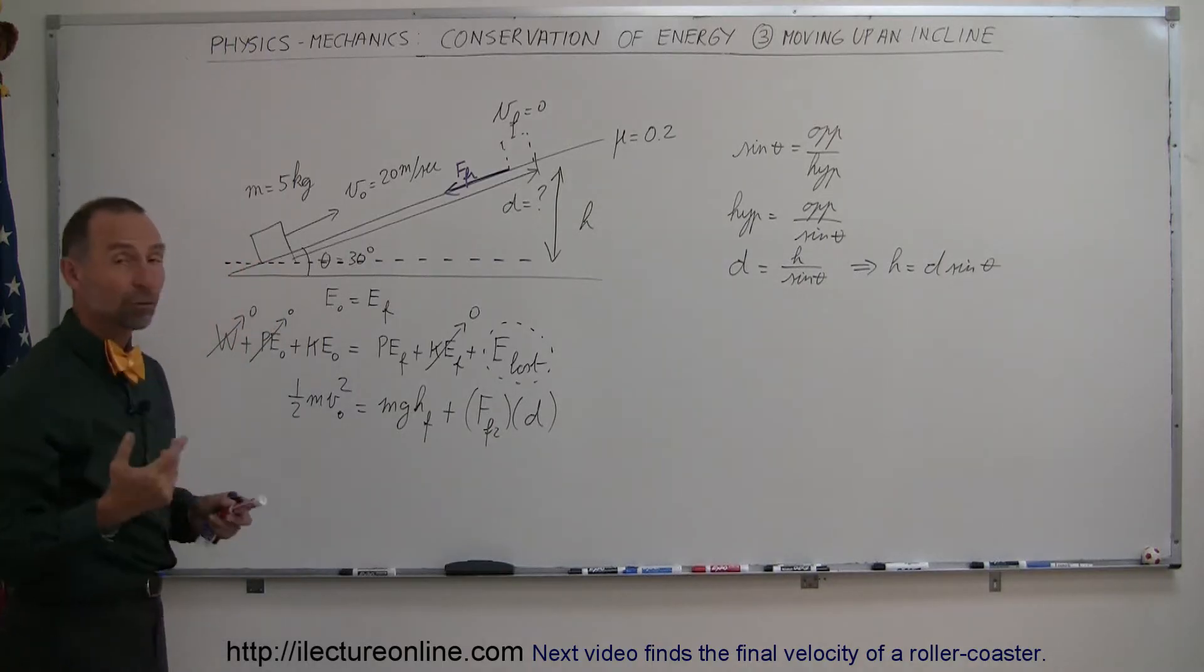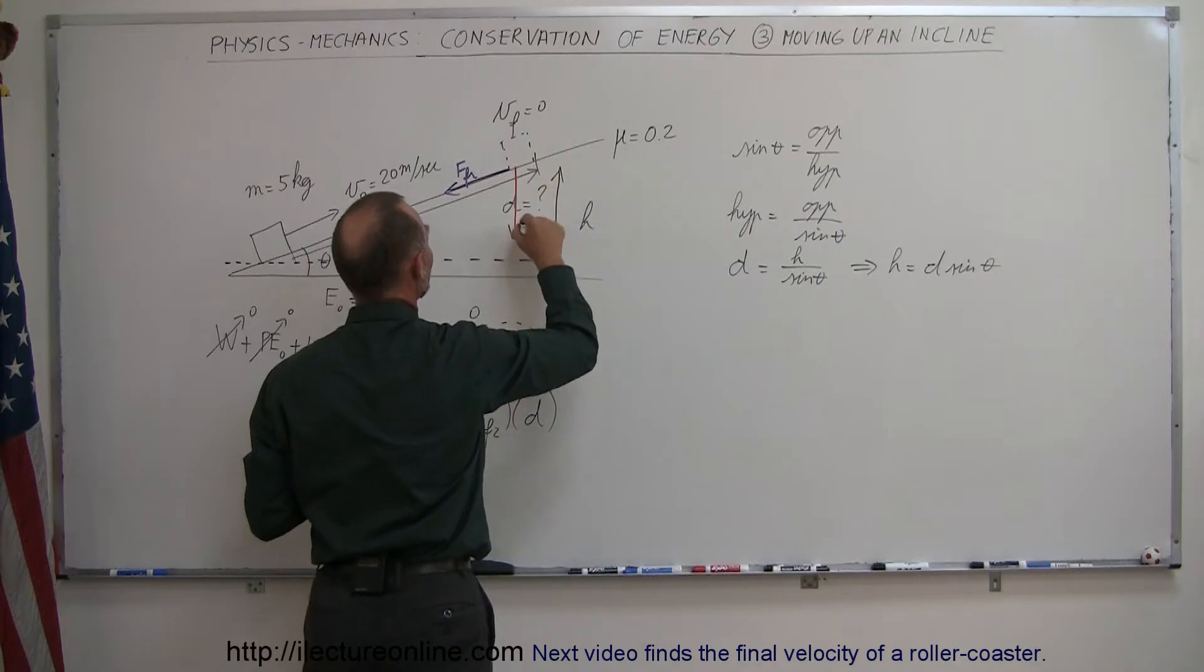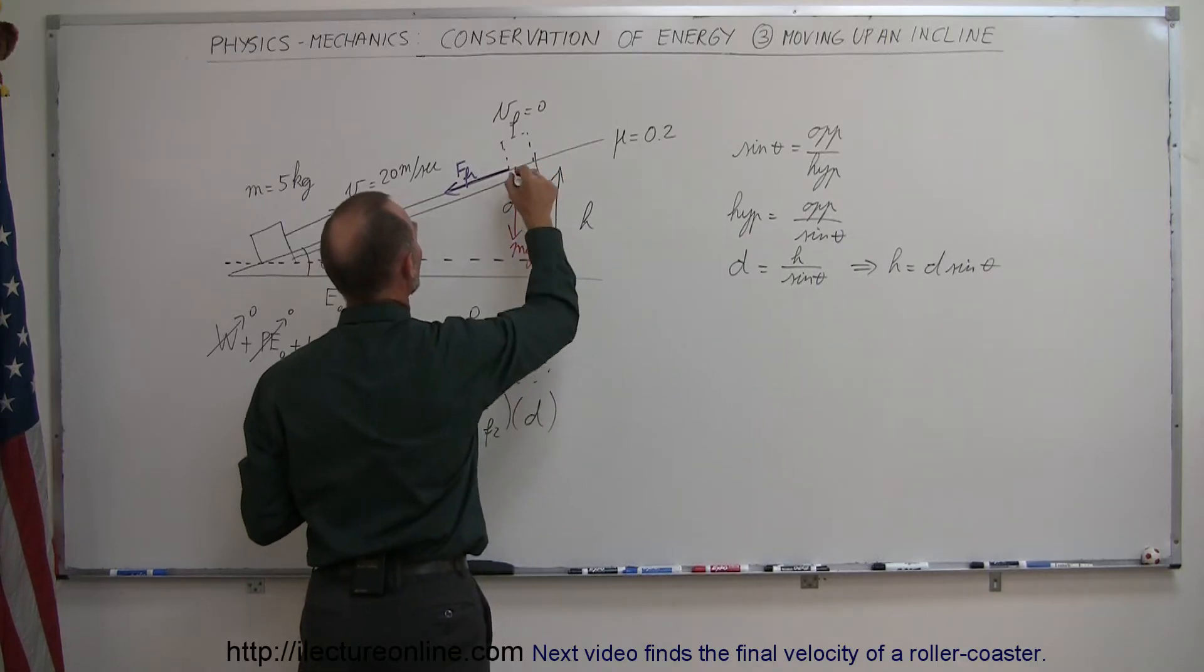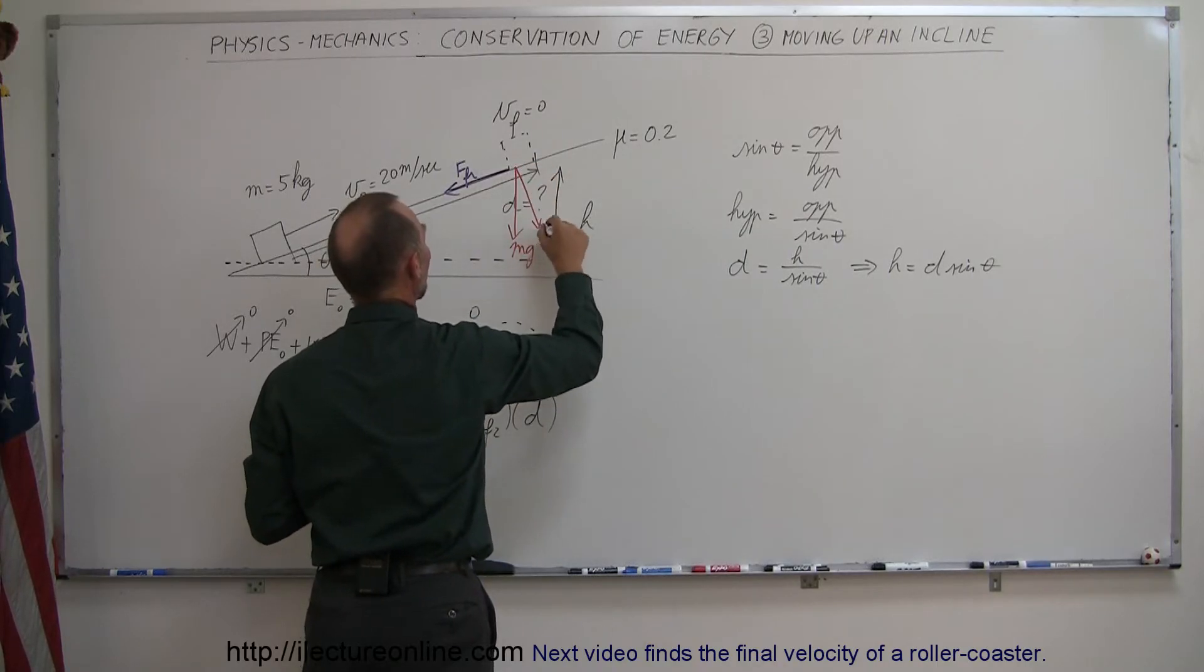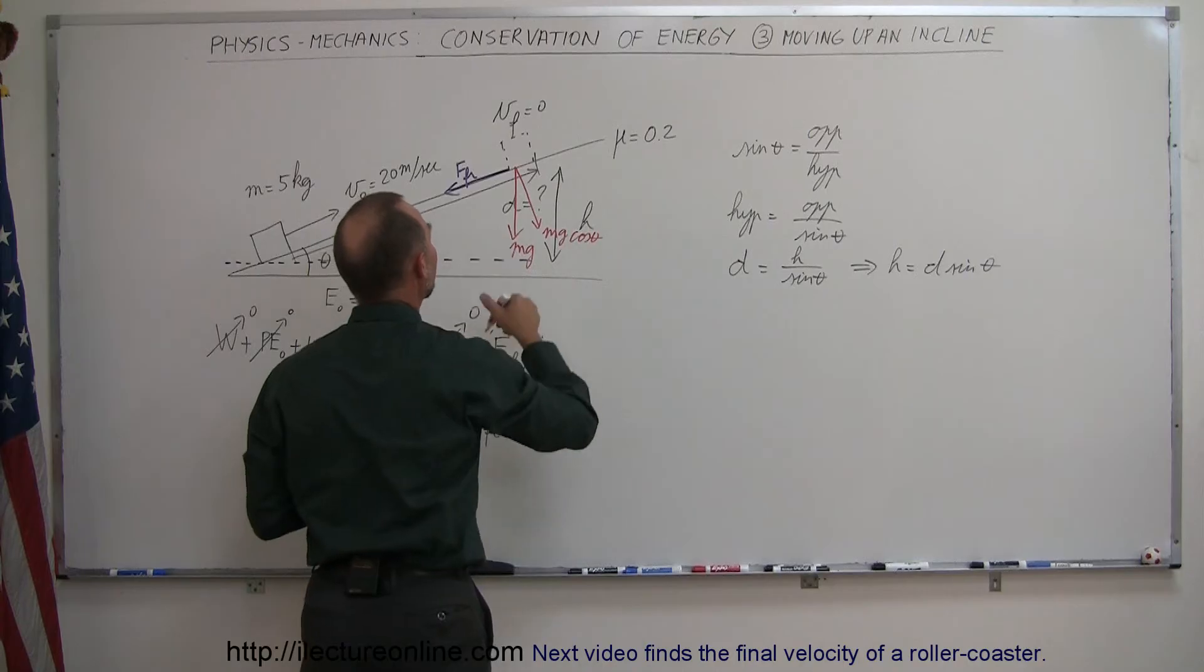So how much friction or how much force is the friction pushing down with? Well, we have the mg, the weight of the object. We have the mg cosine theta term, mg times the cosine of theta, which is the perpendicular component of the weight.